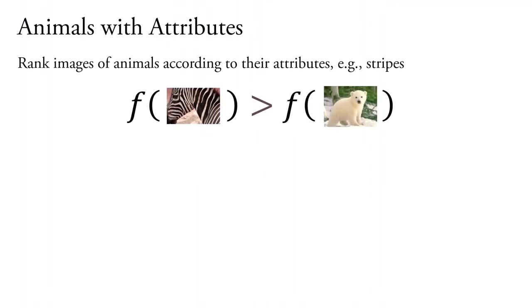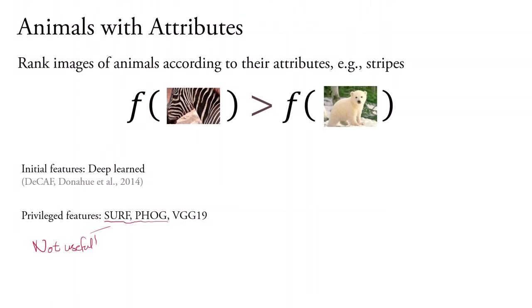So, let's see some experimental results. And we're going to start with the animals with attributes dataset. And here we're going to try to rank images of animals according to, for example, how stripy they are. We're going to use initial deep-learned features for f, then provide privileged features of SURF, HOG, and VGG19. Now, you will notice that the classical SURF and HOG features are less likely to be useful than the deep-learned VGG19 features. And, as expected, our approach selects to use the VGG19 features with stronger weights. Let's look at the improvement over the initial predictor FI averaged over the 50 different attributes in the dataset.